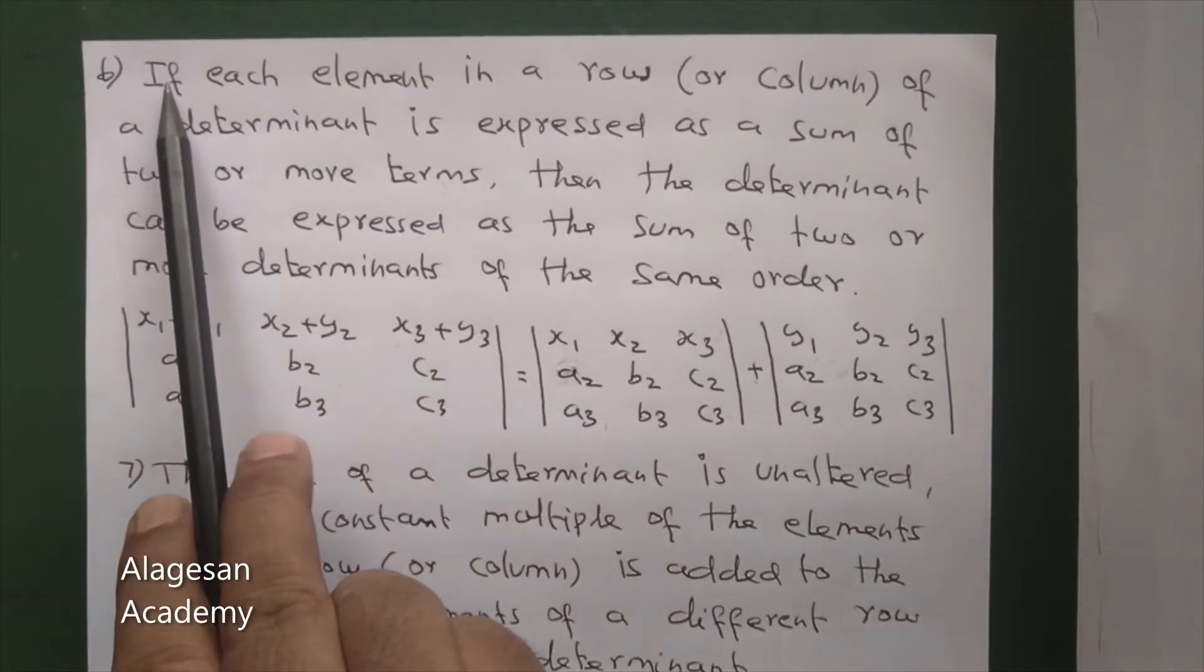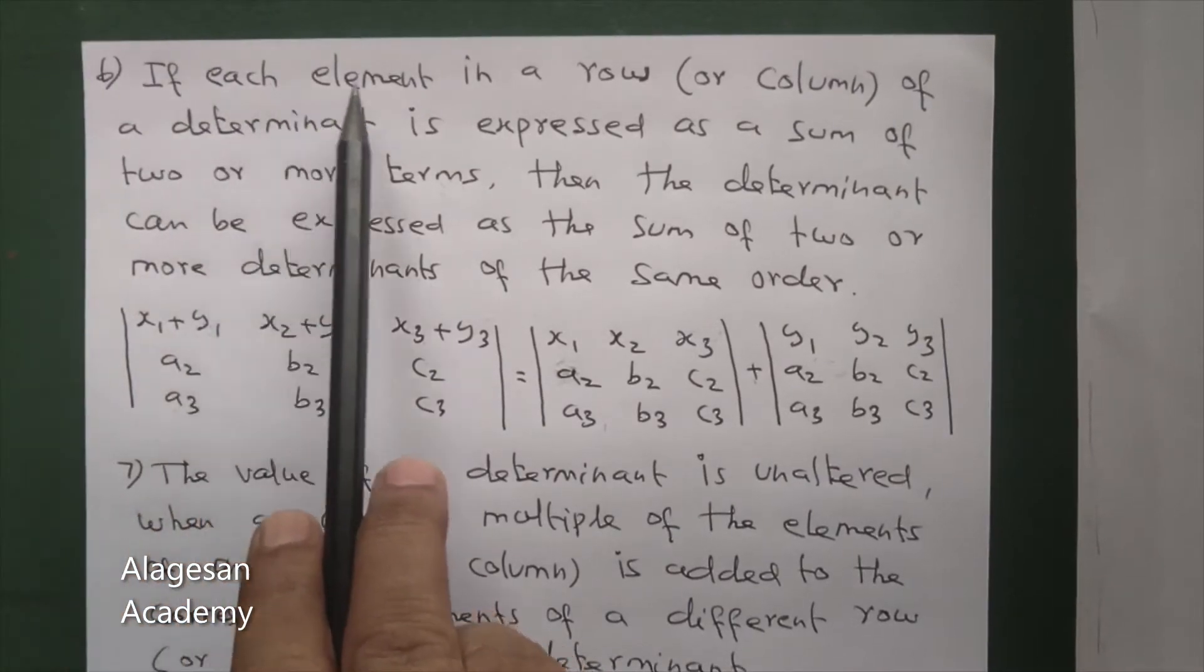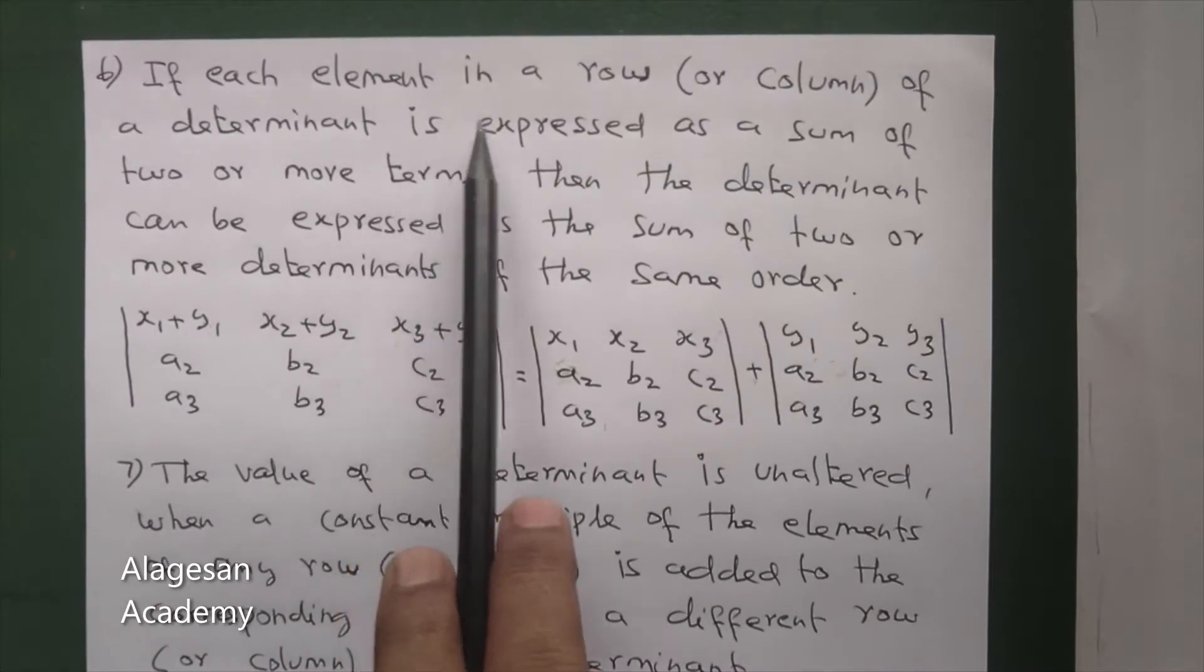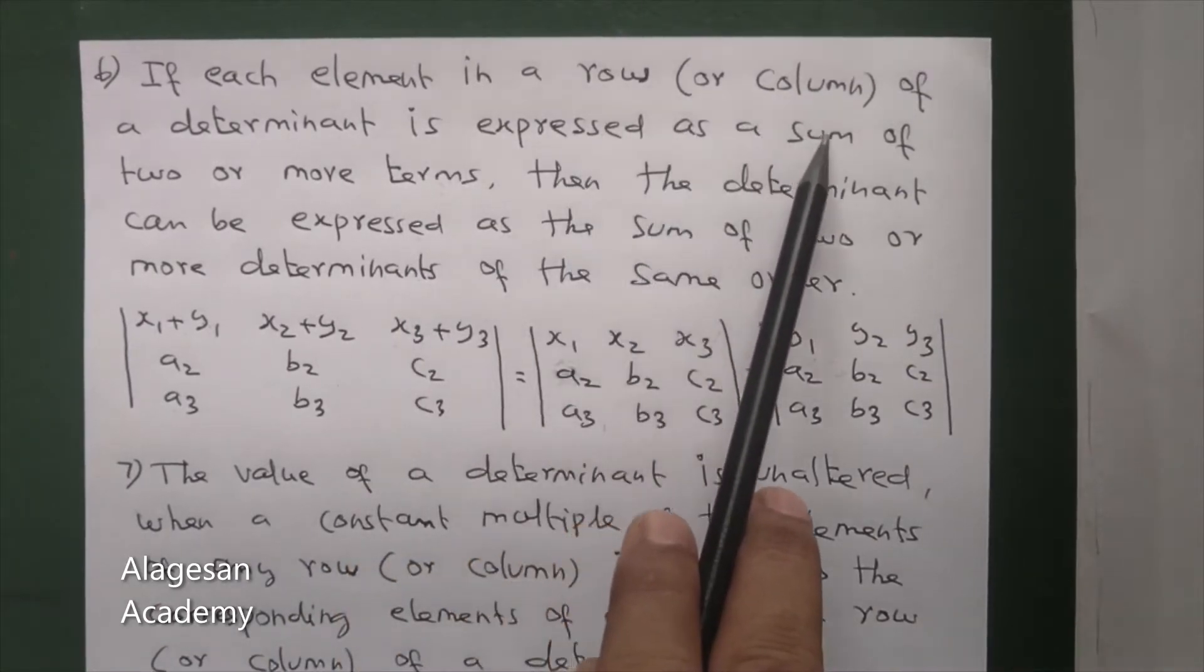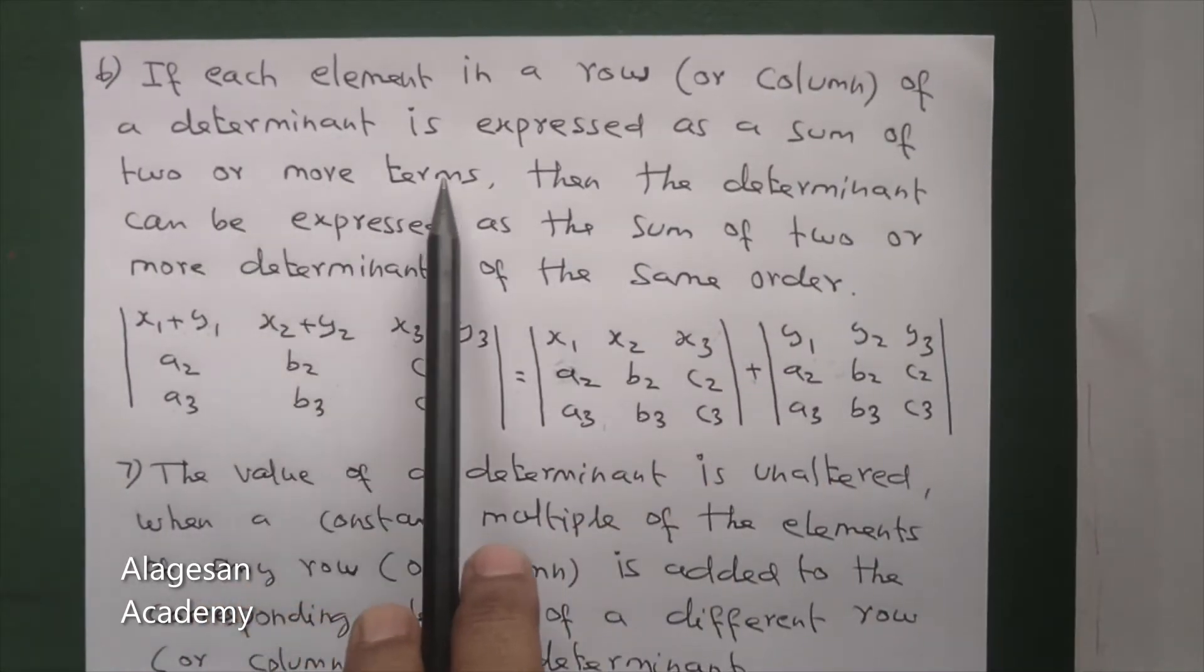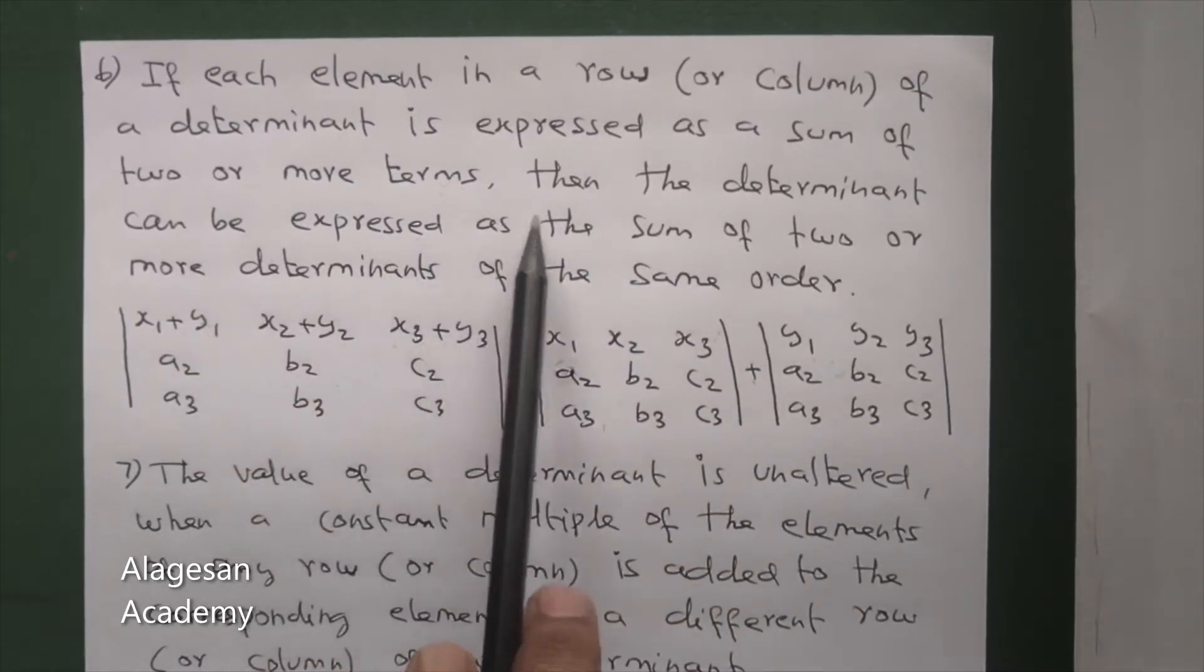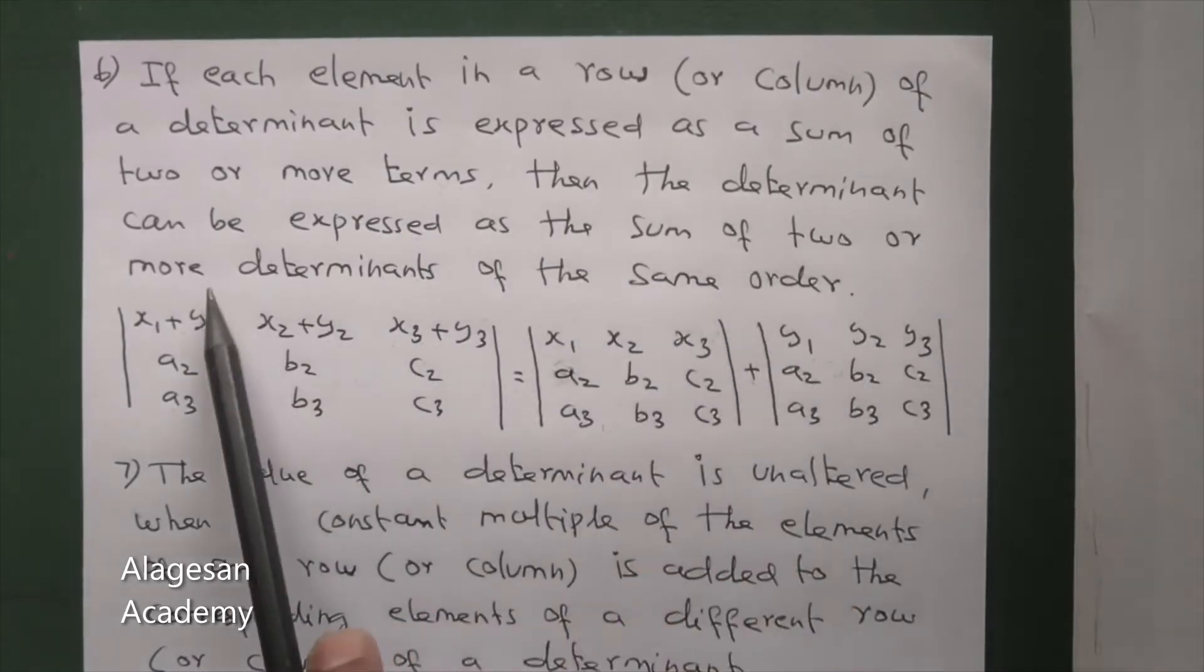Hi students, see the next property. If each element in a row or column of a determinant is expressed as a sum of two or more terms, then the determinant can be expressed as the sum of two or more determinants of the same order.